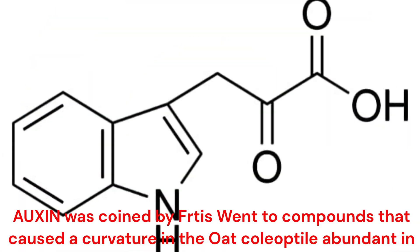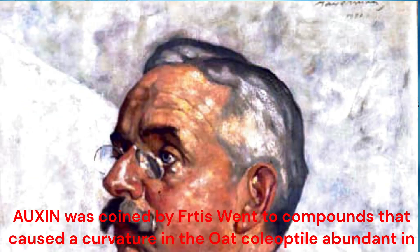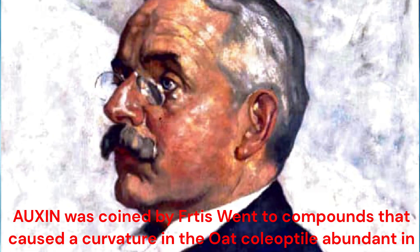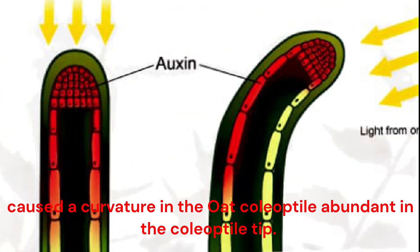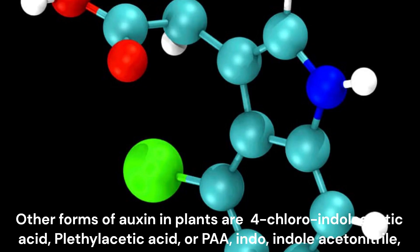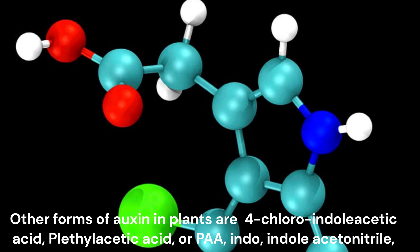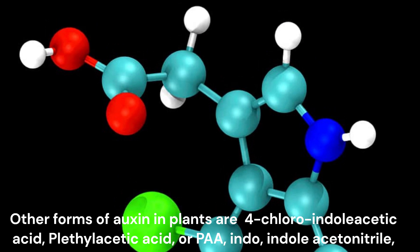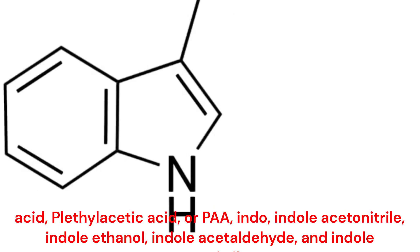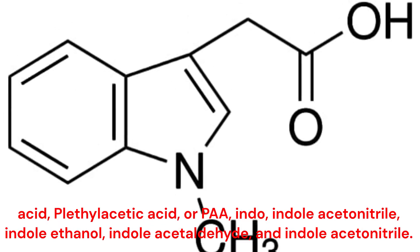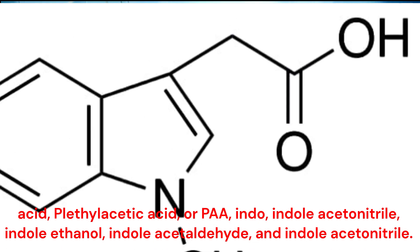Auxin was coined by Frits Went for compounds that caused a curvature in the oat coleoptile, abundant in the coleoptile tip. Other forms of auxin in plants are 4-chloroindoleacetic acid, phenylacetic acid (PA), indoleacetonitrile, indoleethanol, and indoleacetaldehyde.